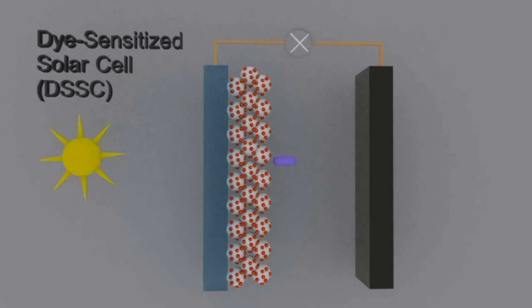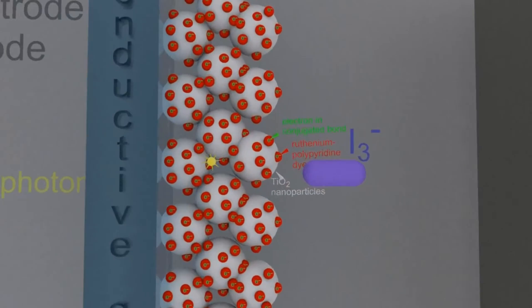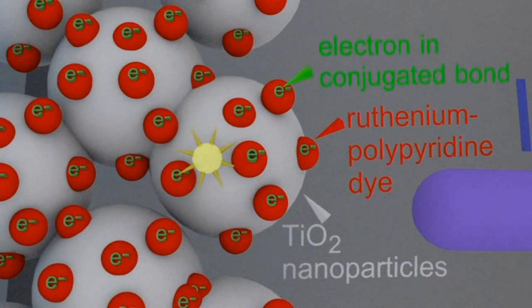Alright, let me add some labels and we'll go through it step by step. So the sun releases a photon, a particle of light towards the ruthenium polyperidine dye, which is attached to titanium(IV) oxide nanoparticles. And that dye contains an electron in a conjugated bond.